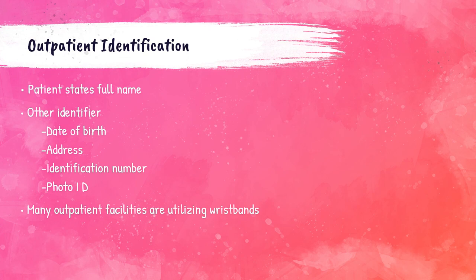Outpatient identification usually involves the patient presenting an ID card at the front desk. When brought to the blood drawing area, they must be asked to state their name and date of birth, which is compared to the printed labels. If a patient has an outpatient procedure or is in bed for a day, they will have a wristband similar to an inpatient. However, if a patient walks into a blood collection facility as an outpatient, they will not have a wristband.